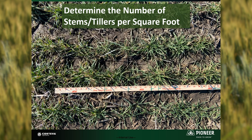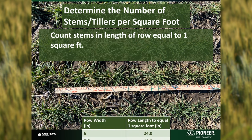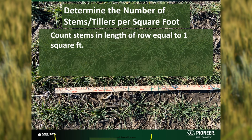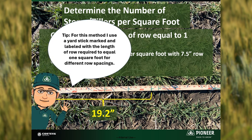The other method requires you to know the length of row equal to one square foot based on the row width. This chart provides the row length for some common row widths. The wheat in this picture is planted at 7.5 inches apart. To get the number of stems per square foot, count the number of stems in 19.2 inches. I keep a yardstick marked and labeled with the length of row required to equal one square foot for different row spacings.